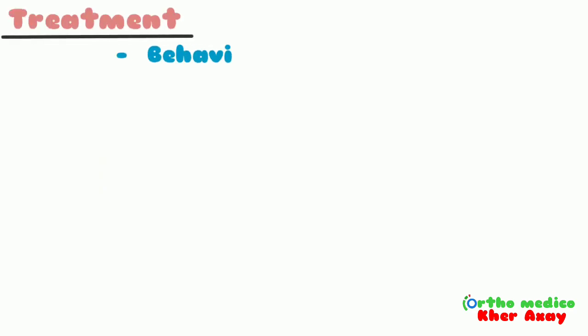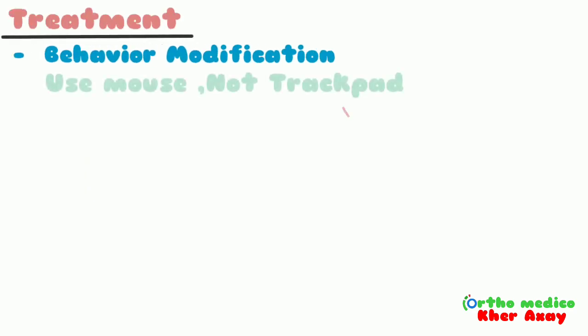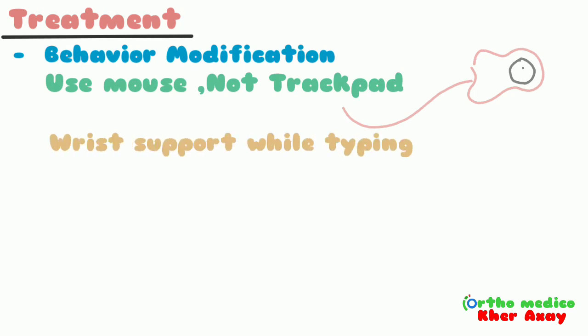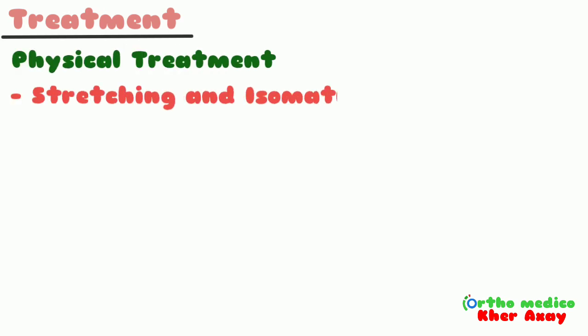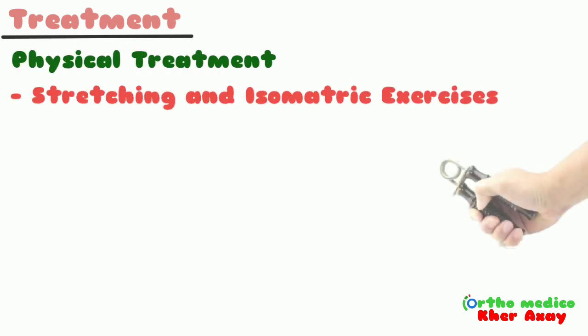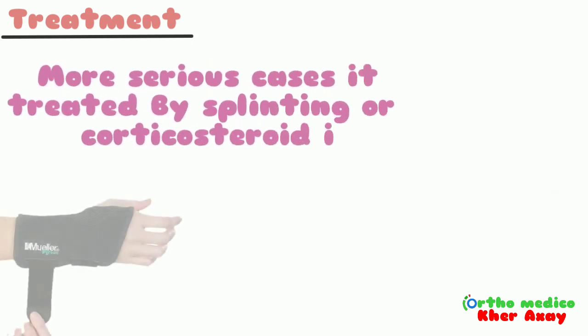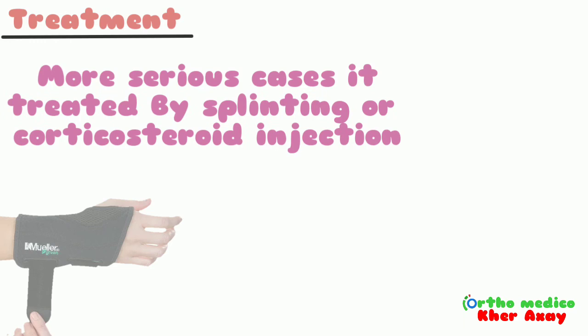Treatment begins with behaviour modification, such as using a mouse rather than a trackpad and wearing wrist support while typing. Physical treatment like stretching and isometric exercises can help. More serious cases are treated with splinting or corticosteroid injection.